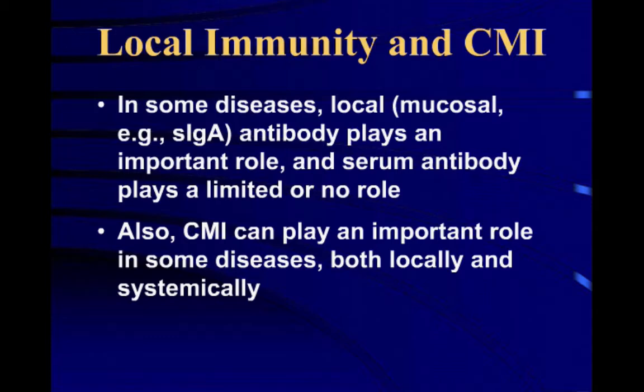B cells need that help from T cells. So when we're looking at titers, we're not only looking at antibody or humoral immunity — we're looking at immunologic memory, and we're looking at one aspect of cellular immunity as well. That's the role that T cells play in helping B cells produce antibody.